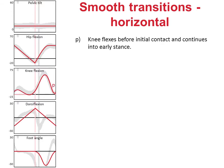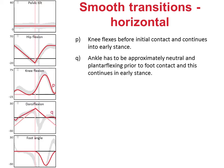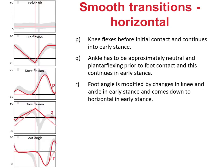First of all, the knee must flex before initial contact and this continues into early stance. The ankle must also be plantar flexing at initial contact, and this requires it to have been in a little dorsiflexion earlier in swing. Finally, the foot angle is modified as a consequence of changes in both the knee and ankle angles.